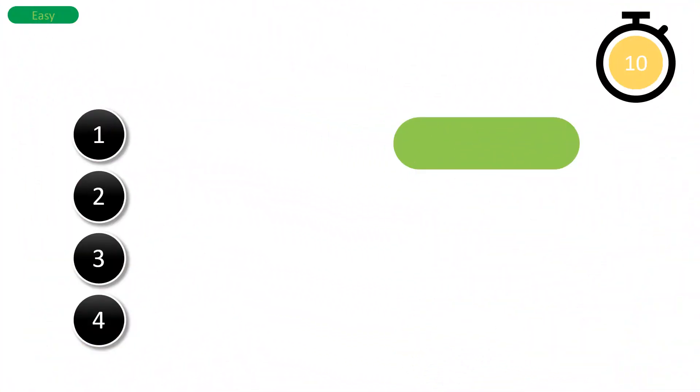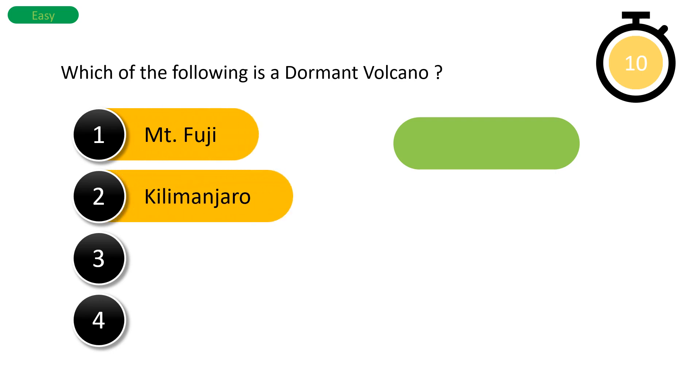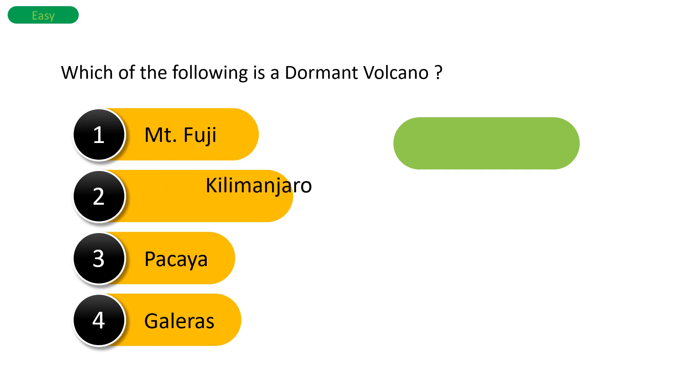The first question of the easy round is: which of the following is a dormant volcano? Your options are Mount Fuji, Kilimanjaro, Pacaya, or Galeras. The time starts now. The right answer is Kilimanjaro.